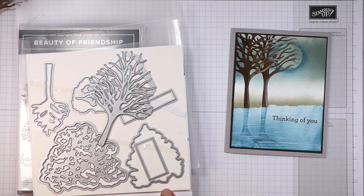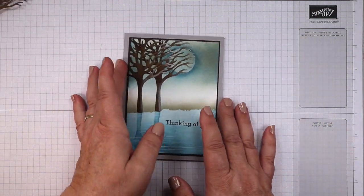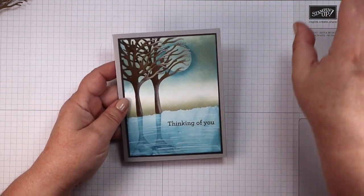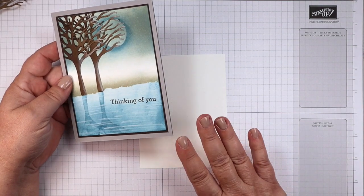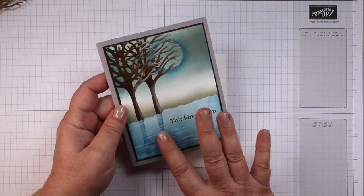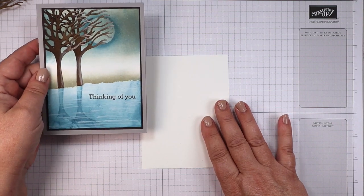So are you ready to get started on this? We are going to go step by step on this card and we're first going to start out with putting in our background and our reflection, and then we'll bring our tree dies in.